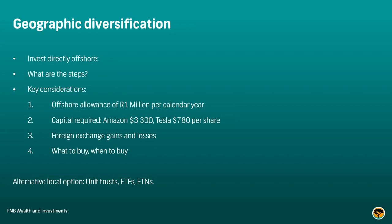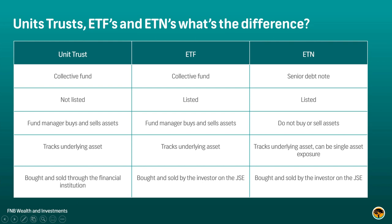So maybe it's not the best thing to go directly invest offshore straight away in a market that you're potentially unfamiliar with. What are the alternatives for local investors to obtain international exposure? There are fantastic instruments: unit trusts, exchange traded funds, and exchange traded notes — local instruments that you can purchase on the JSE or through local financial institutions that tick the box with regards to diversification.